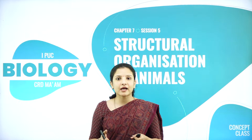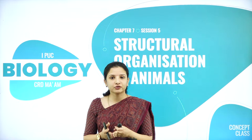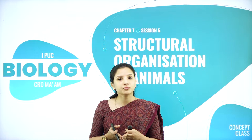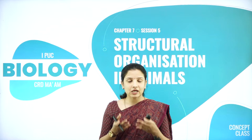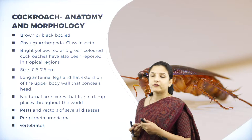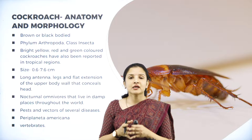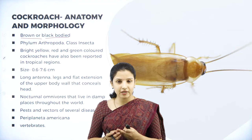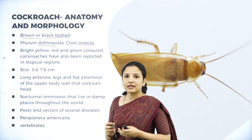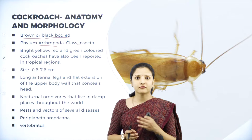Cockroaches are found everywhere — in clean places as well as in dirty environments, inside the cupboard, inside bookshelves, racks, everywhere. These cockroaches are harmful to human beings as they cause a lot of diseases such as food poisoning. In today's session, we shall understand the morphology of cockroach, what family it belongs to, and the external characteristic features of the cockroach. The cockroach is brown or black bodied, and in some tropical countries cockroaches are also green in color.